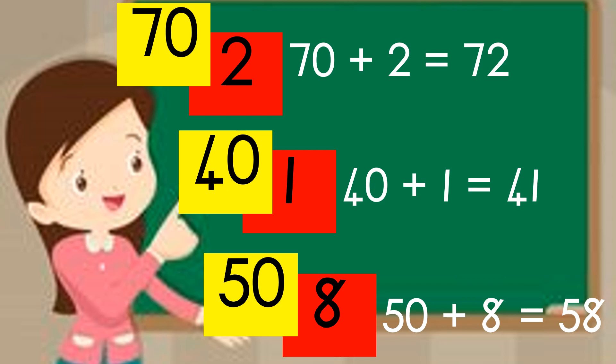The next example is 41. Now if you listen to the words, it actually gives you the answer. 41. So it's a 40 and a 1. 58. I'm going to rename it as a 50 and an 8.